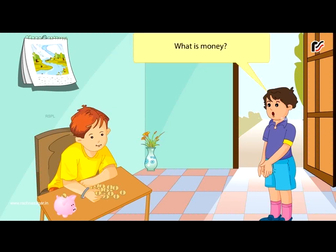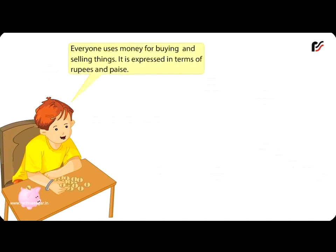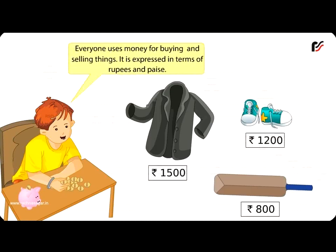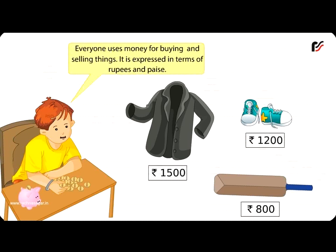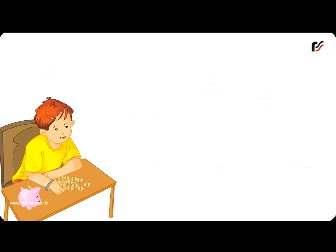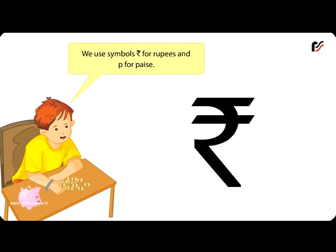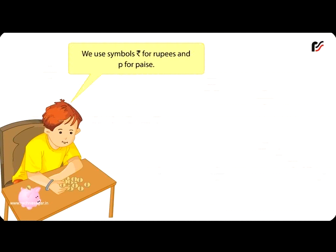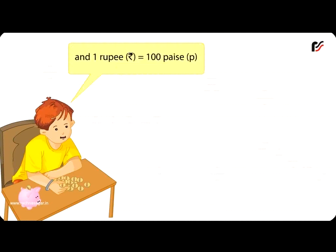What is money? Everyone uses money for buying and selling things. It is expressed in terms of rupees and paise. We use the symbol ₹ for rupees and P for paise, and 1 rupee is equal to 100 paise.